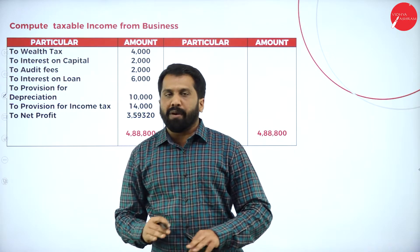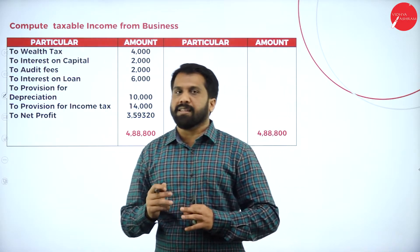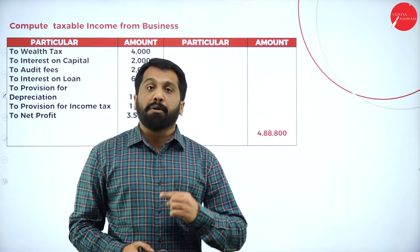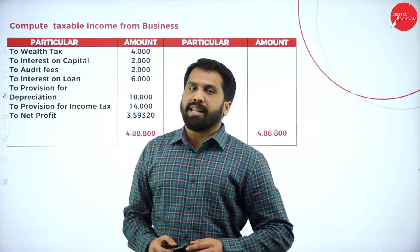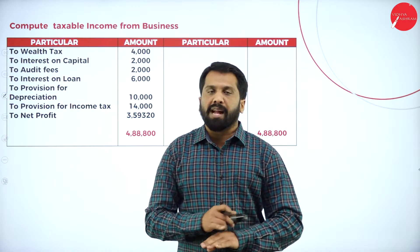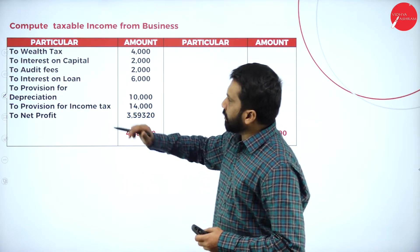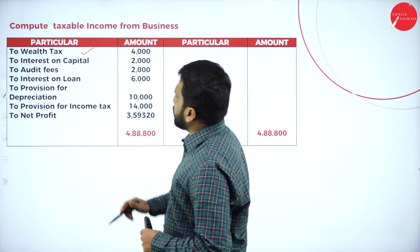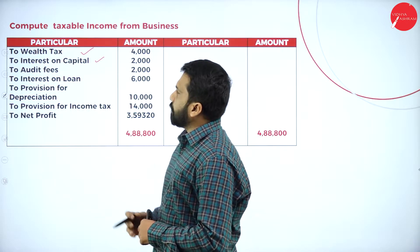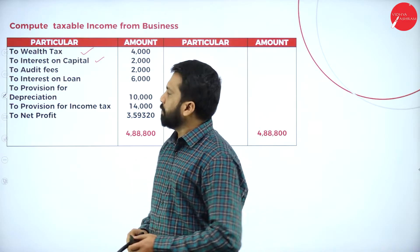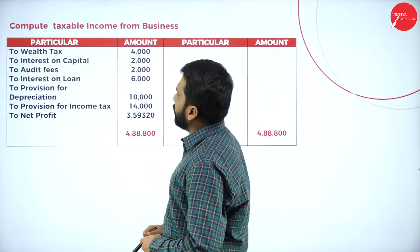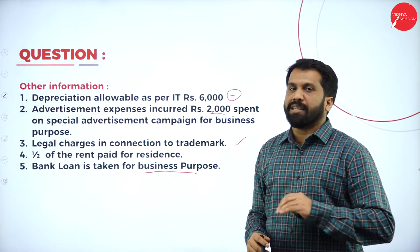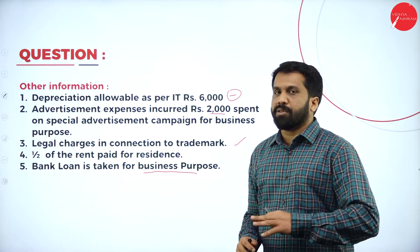Wealth tax — right now we don't have wealth tax because it is abolished. Earlier, if you had property of 30 lakh and above, you were supposed to pay 1% wealth tax. Right now we don't calculate that, so it is not part of business. Next, interest on capital — similarly, it is not part of business. Audit fees is an expenditure that is part of the business. Interest on loan — in the adjustment, they have given that the bank loan is taken for business purpose, so interest on loan is part of the business and we will not touch that.